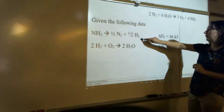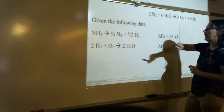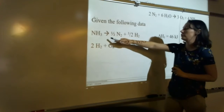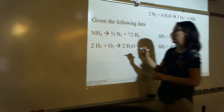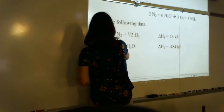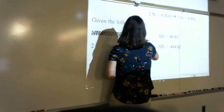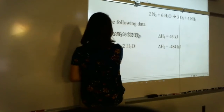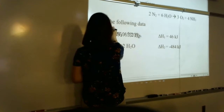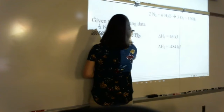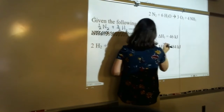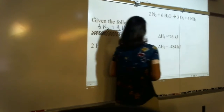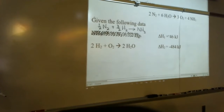N₂ is found in the first sub-step. We also want NH₃ to be a product, but it's currently listed as a reactant in the sub-step. So we need to reverse it: ½N₂ + 3/2 H₂ → NH₃, and now delta H is negative because reversing changes the sign of delta H.